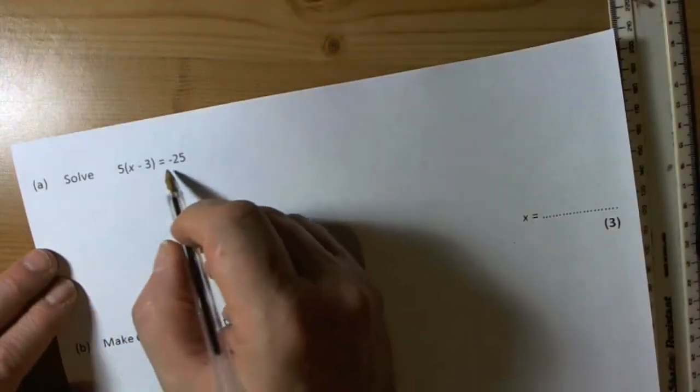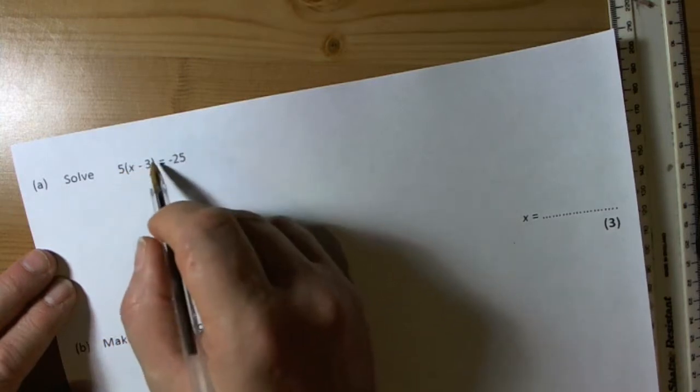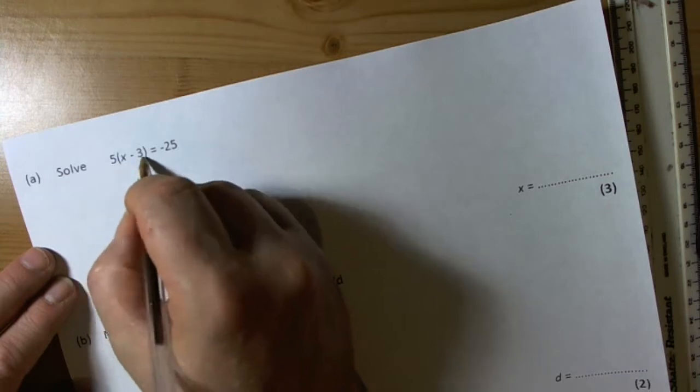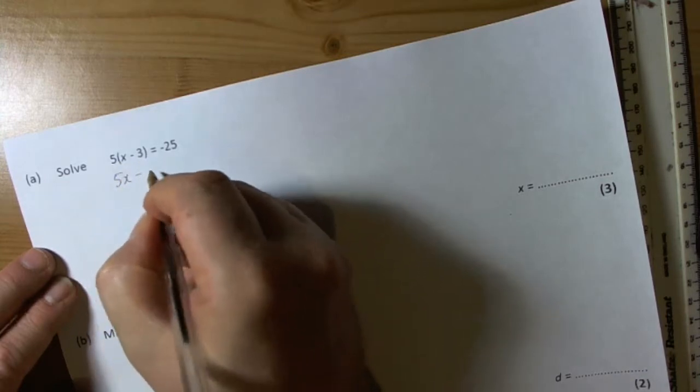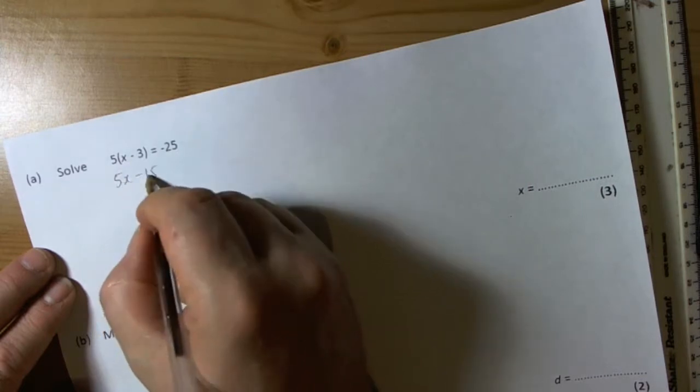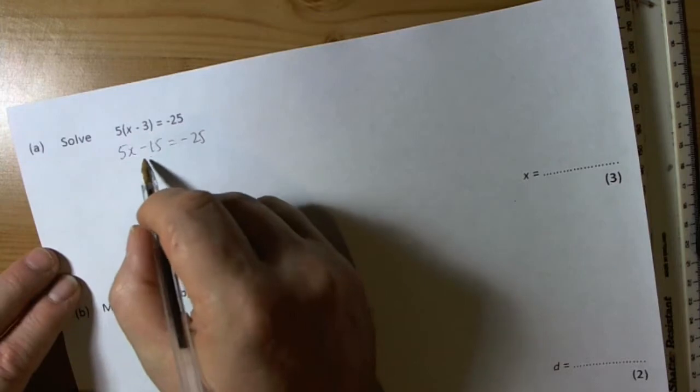Okay, so the first question says solve, which means find the value of x that makes this true. Several ways we could do this. The quickest way would probably be to expand the bracket, so 5x and 5 times 3 makes 15, which is a takeaway. So 5x take away 15 equals negative 25.